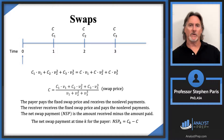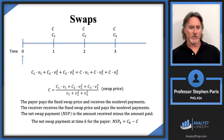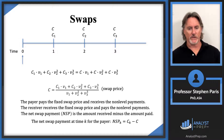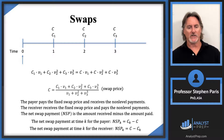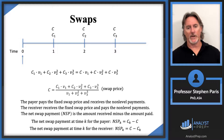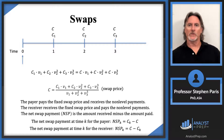The receiver is on the opposite end. The net swap payment at time K for the receiver is just the negative of the net swap payment for the payer. So if the payer owes 10, the receiver is receiving 10 — being paid 10.